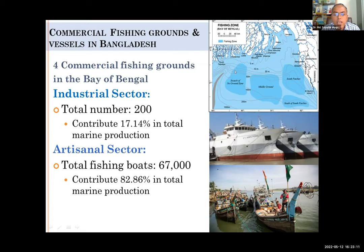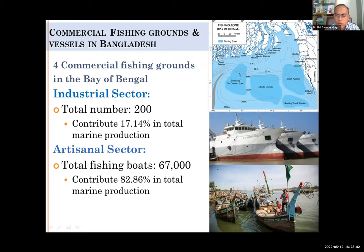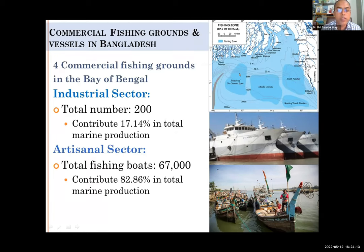Apart from commercial fishing sectors beyond 200 nautical miles where industrial vessels operate, we focus on artisanal fishing vessels — about 67,000 to 68,000 mechanized and non-mechanized vessels in Bangladesh. Among the total fisheries production, marine fisheries contributes about 18%, and the artisanal fishing sector contributes more than 80% of the marine catch, while about 17% comes from commercial fishing vessels. This production is mainly targeted as Hilsha fishing.